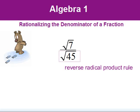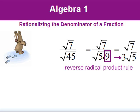Forty-five equals five times nine. Since nine is a perfect square, we can take the nine out from under the radical sign. The square root of nine is three.